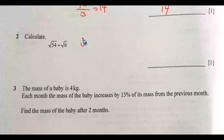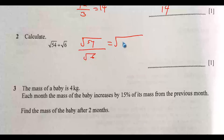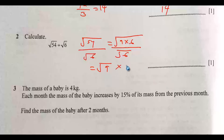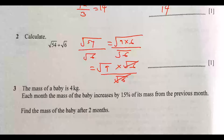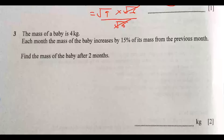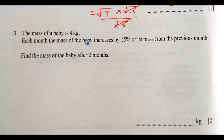Question 2: Calculate √54 ÷ √6. We write this as √54 / √6, which equals √(9×6) / √6. Splitting the radical: √9 × √6 / √6. The √6 cancels, leaving √9 = 3. So the answer is 3.